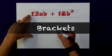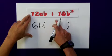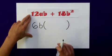I now need to create my brackets. And within the brackets, I need to have the terms which, when multiplied out, will give me these terms back again.